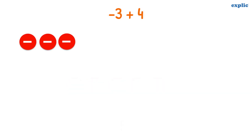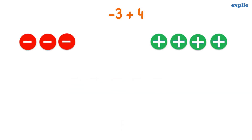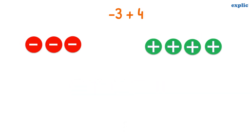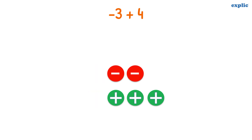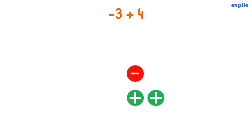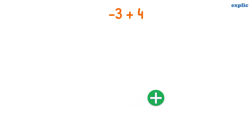To add minus 3 and plus 4, take 3 minus signs and 4 plus signs. As we know, plus 1 and minus 1 is equal to 0. We can cancel out 1 plus and 1 minus sign. Therefore the answer is plus 1.